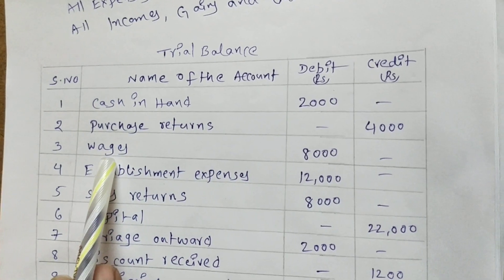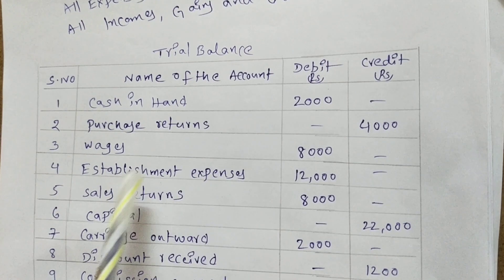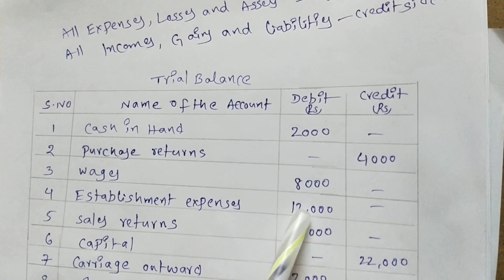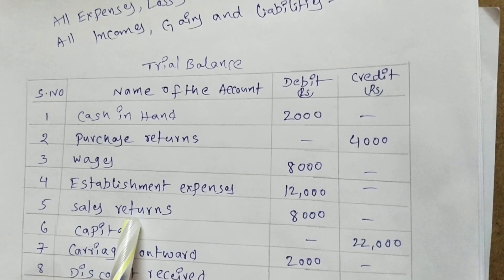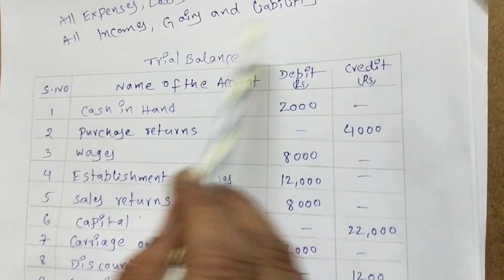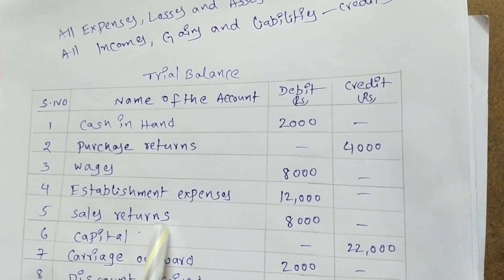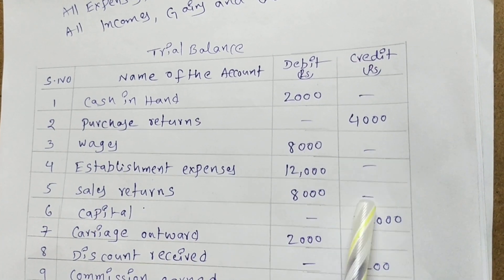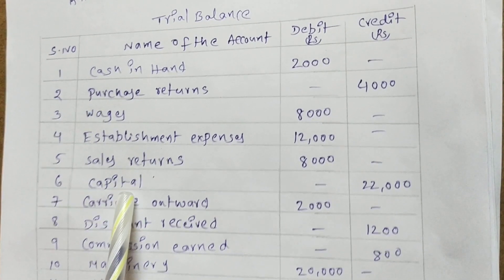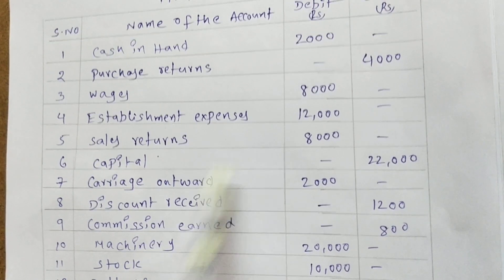Next, wages — wages are expenditure, debit side. Establishment expenses — all expenses go on the debit side. Sales returns — sales is income, all incomes go on the credit side, but sales returns is the opposite, a cancellation, so write it on the debit side. Sales: credit side. Sales returns: debit side. Capital — capital is the owner's investment, it is a liability, so credit side.